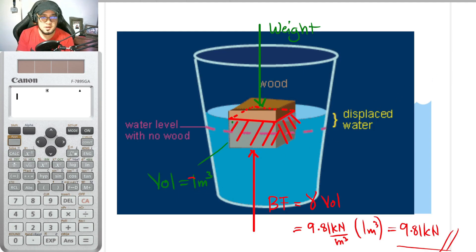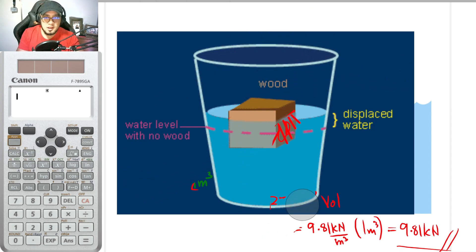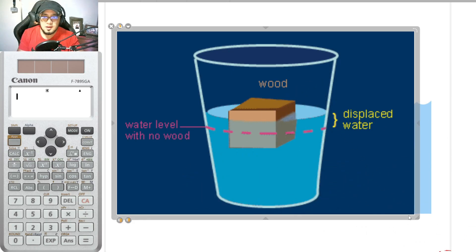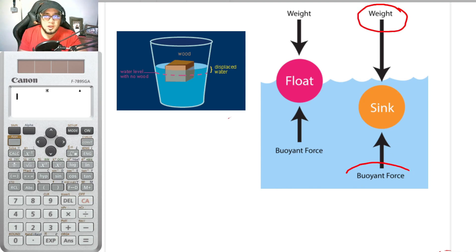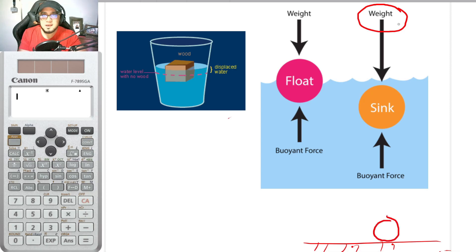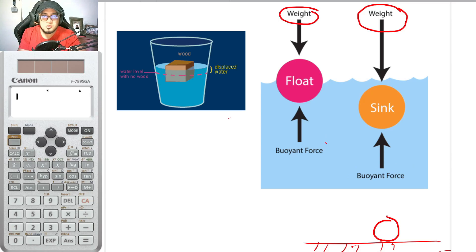Remember, only the submerged volume is used to compute buoyancy. If the weight of the object is greater than the buoyant force, the object sinks to the floor. If the weight equals the buoyant force, the object floats in equilibrium.